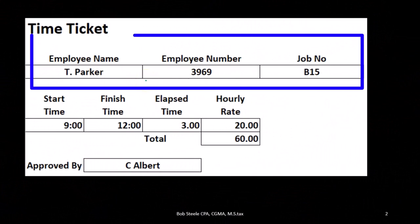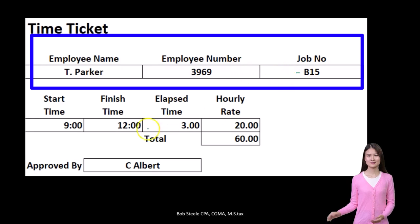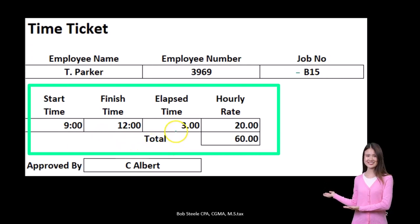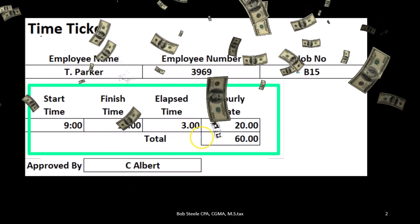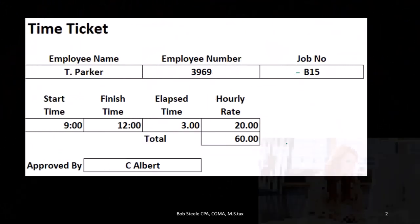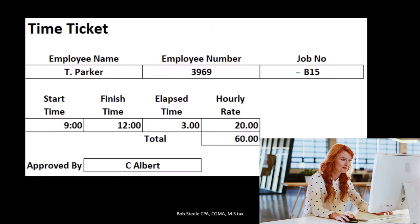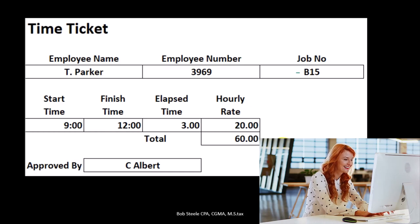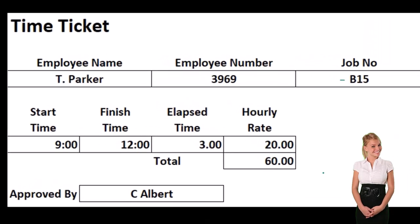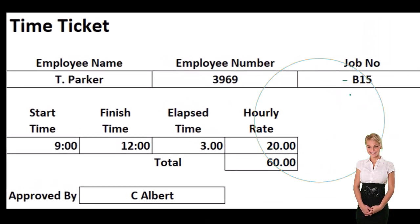We'll have the employee number if we have one, and then the job — that's the important component — the job that we're going to assign it to. We have time in, time out, the time elapsed, the rate, and that gives us the amount to apply to each job. This could be used in a computerized system or an old-style time tracker. Whatever format we use, we have to make sure the time is applied to the correct job so we can post it to work in process, supported by the job sheets.